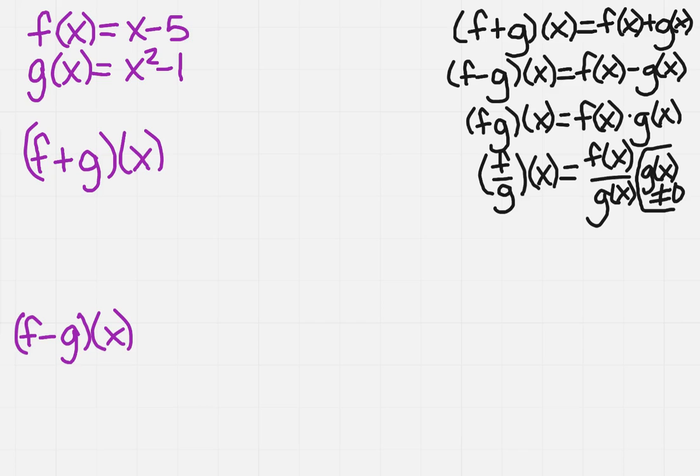The best way to do this is to show you how to do it rather than trying to speak about f of x and g of x abstractly. So we have f of x is x minus 5 and g of x is x squared minus 1. If I want to find the sum of f plus g, I'm going to add the functions together.